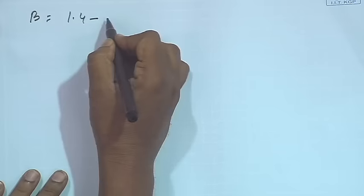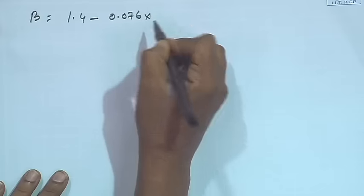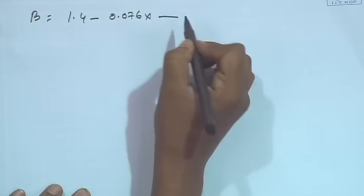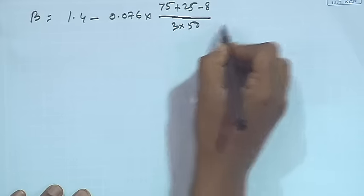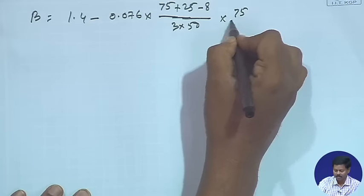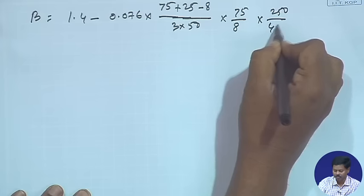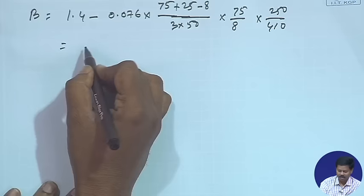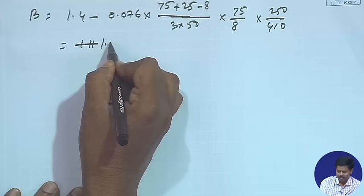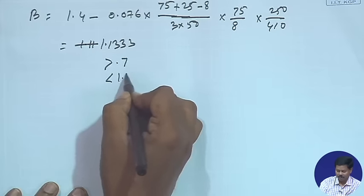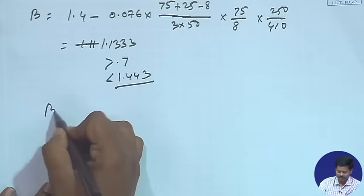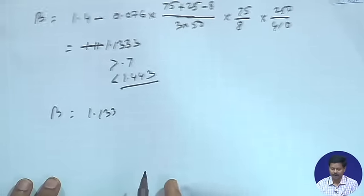We can find out the TDN value once beta is known. In this case, beta = 1.4 − 0.076 × (bs/lc) × (w/t) × (fy/fu). Here bs = 75 + 25 − 8 (outstanding length plus 25 minus thickness), lc = 3 × 50, and w/t is outstanding length / t. Calculating this we get beta = 1.133, which is greater than 0.7 and less than 1.443, so beta = 1.133.